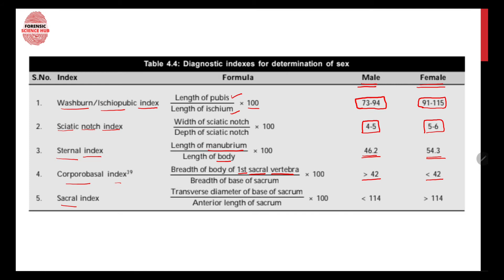Then we have the sacral index, in which the transverse diameter of the base of the sacrum is divided by the anterior length of the sacrum. If it is less than 114, then that is the body of a male, and if it is more than 114, then that is the body of a female.